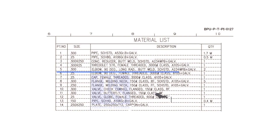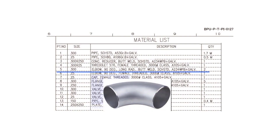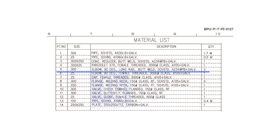Item number 5 is a 300 NB, 90-degree, long radius, butt welded, standard schedule elbow. The quantity is 2.